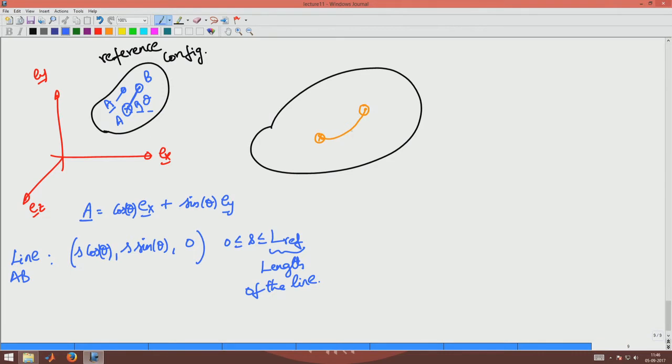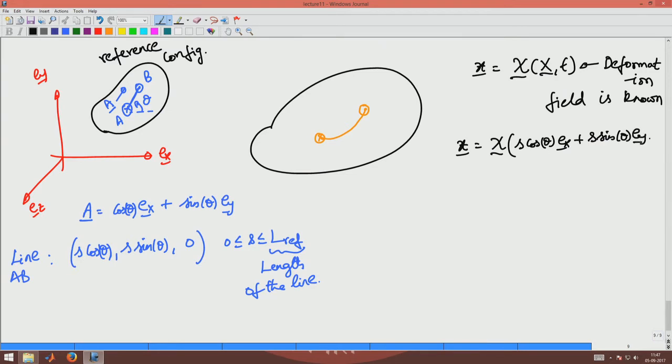Now what happens, this deforms into a curve like this. Say I gave you the function, I gave you the deformation field function, I gave psi as a function of x comma t. This deformation field is known. Then what will you do to find the particles in this curve?